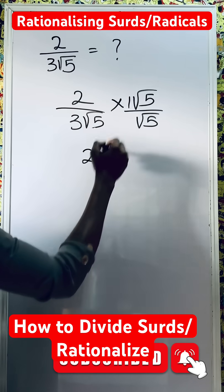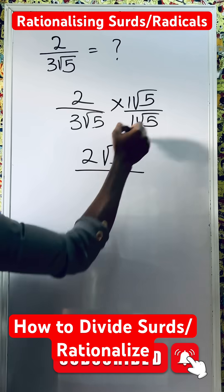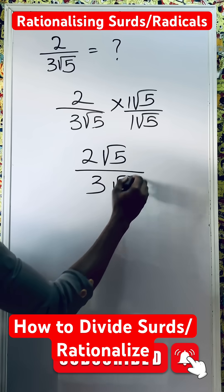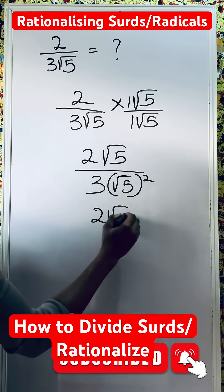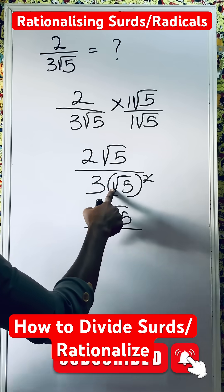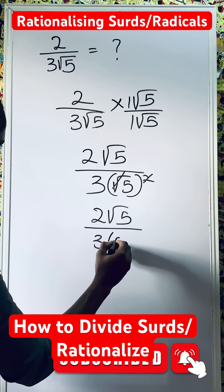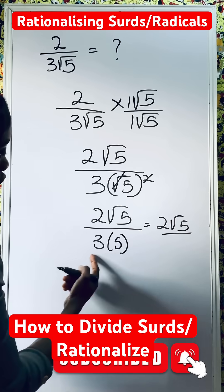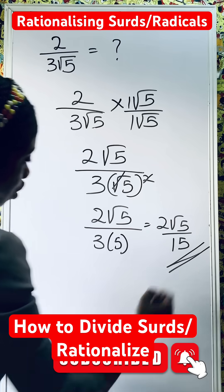2 multiplies 1 gives 2. Then you return root 5 over 3. Here is 1, which gives us 3. This multiplies this — we have root 5 raised to power 2. So this will give us 2 root 5 over. This is 3. Remember here is square root, so it will cancel the square root. We are left with 5. And this gives us 2 root 5 over 15. And this becomes your answer.